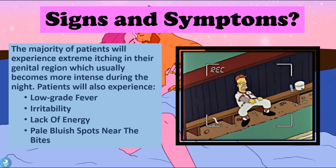So what are the signs and symptoms of pubic lice? The majority of patients will experience extreme itching in their genital region, which usually becomes more intense during the night. Patients may also experience a low-grade fever, irritability, lack of energy, and pale bluish spots near all their bites.